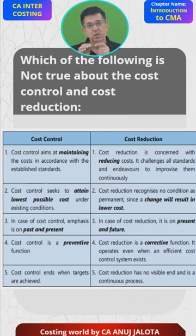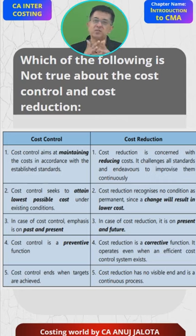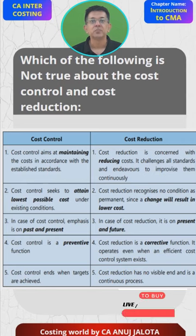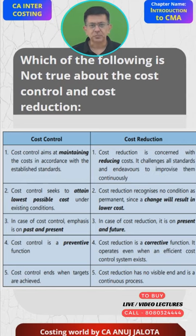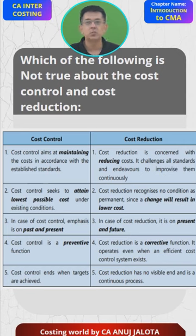If actuals match the standards, we have achieved our target; otherwise, we have not. Cost reduction is different. Even if you are operating a standard costing system, suppose the cost of this bottle is 100 rupees as my manufacturing cost, I still try to think: can I reduce it further?